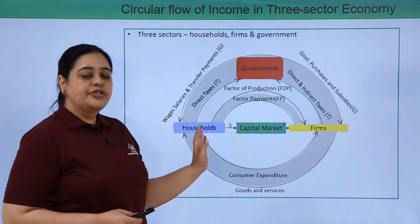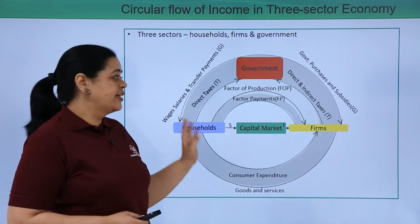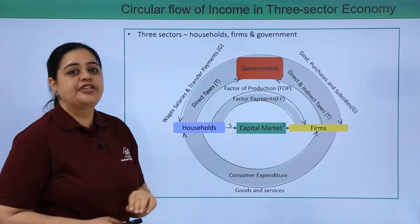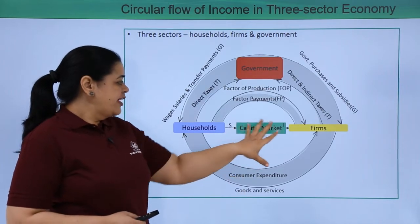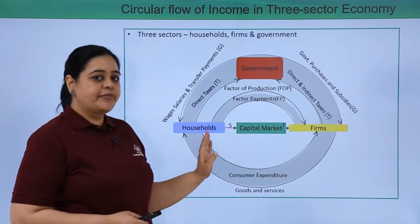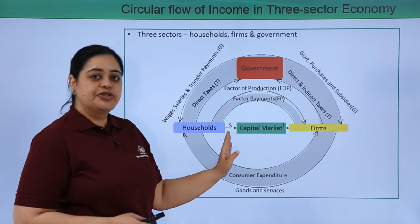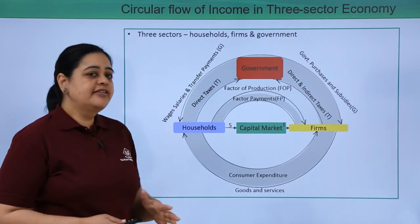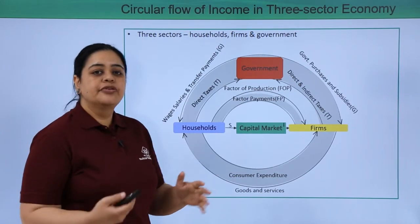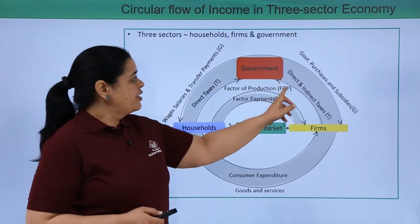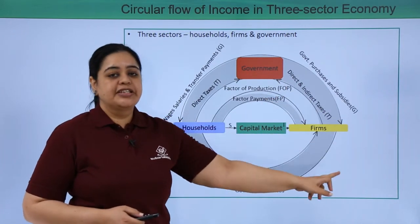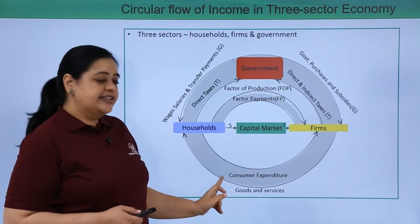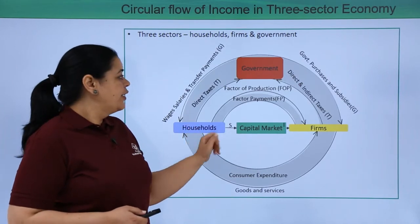In terms of household income, not everything would come as factor income — some income would also come from wages, salaries, and transfer payments. There would also be a capital market in place because there would be savings done by the household. From the capital market, the firm would also receive money to produce goods. Apart from that, there would be government purchases or subsidies provided to firms, and goods and services would be provided to the household.